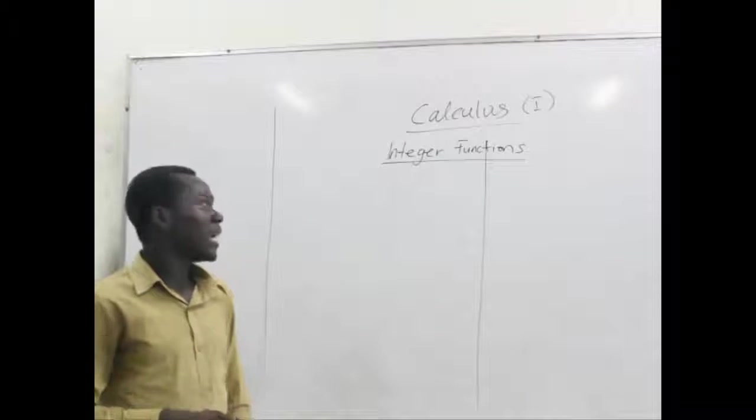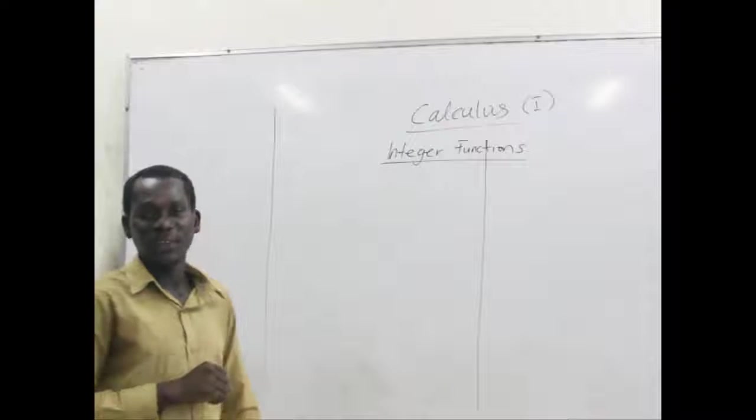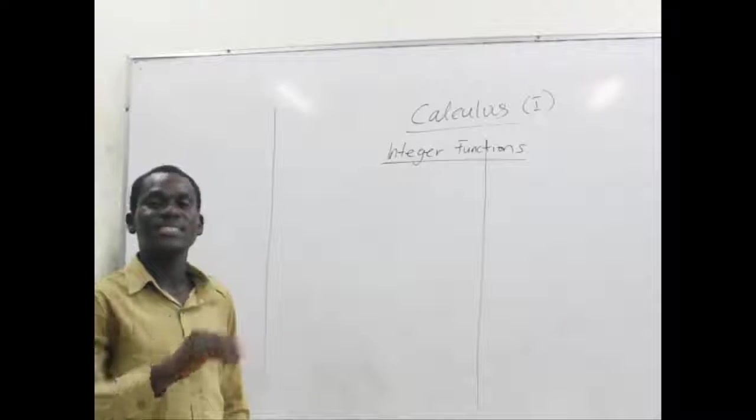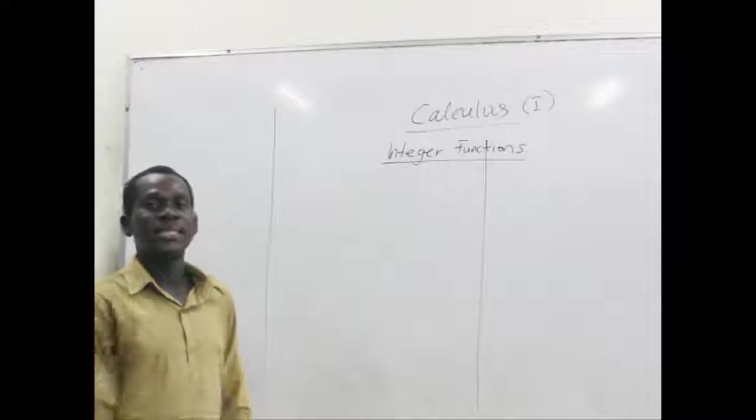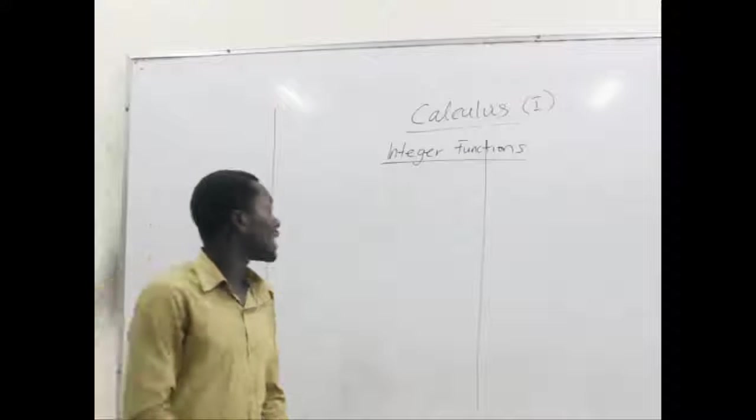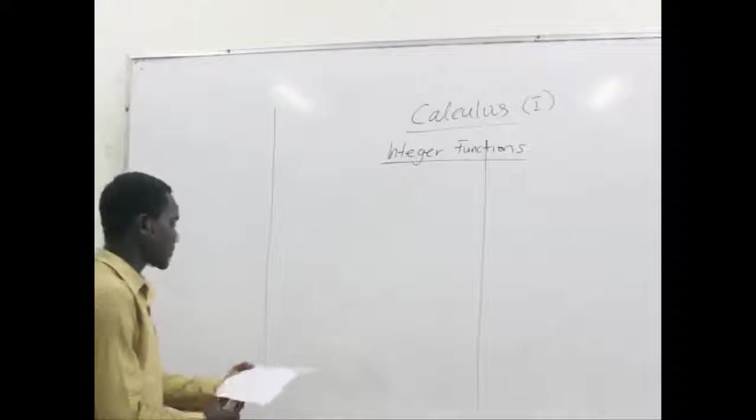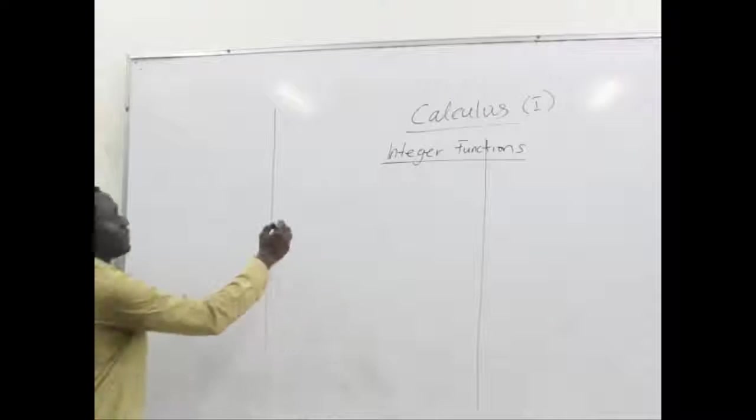So how do we do that? We try to see that we have two types of integer functions. The first one is what we call the greatest integer functions. And the second one is what we call the least integer functions. So let's start with the greatest integer functions.